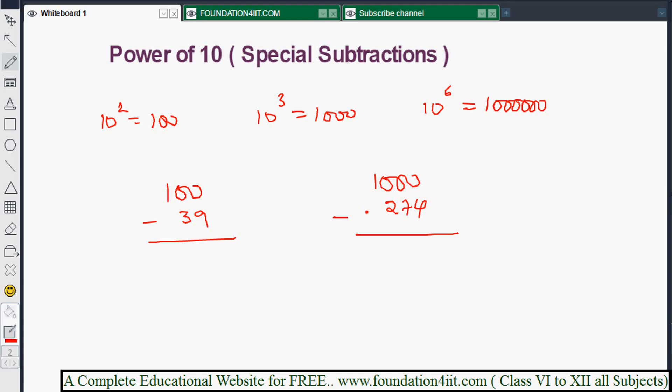In Vedic math we call this nikhilam navatascaramam dasatah, meaning all from 9, last from 10. I'll explain this briefly. The method is that all digits go to 9 except the last, which goes to 10.